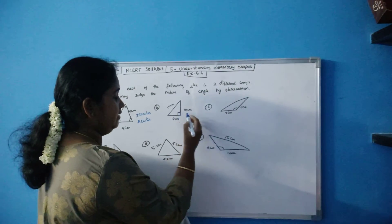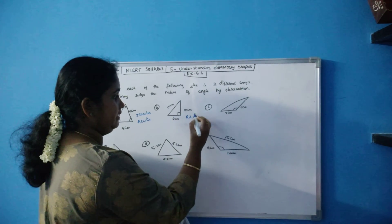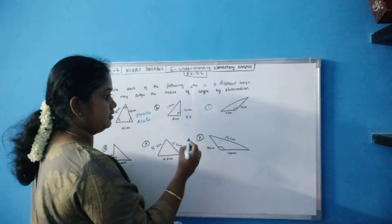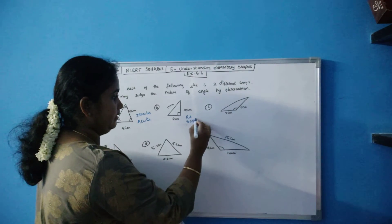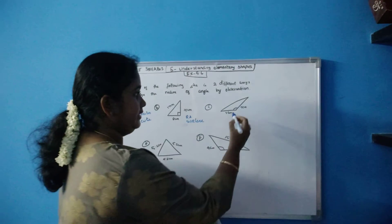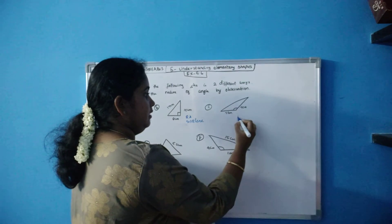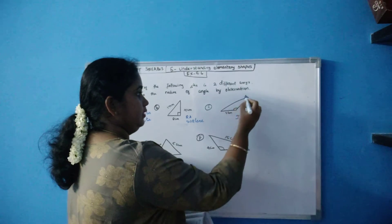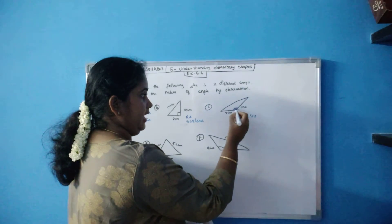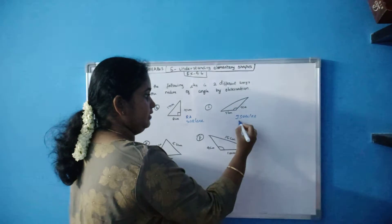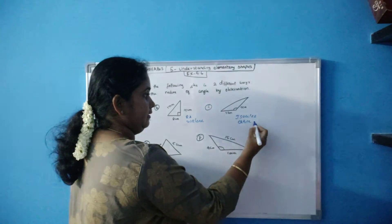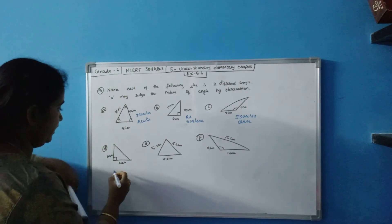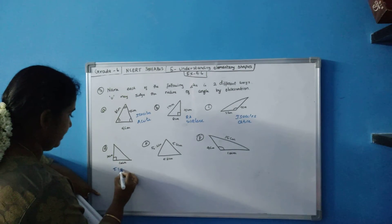See — 90 degrees, so it is a right angle triangle. And all three sides are of different length, so it is a scalene triangle. Here two sides are equal, so it is an isosceles triangle. And the angle is greater than 90 degrees, so it is an obtuse angle triangle. Next: 10 cm, 10 cm — two sides are equal, so it is an isosceles triangle. And 90 degrees — it is a right angle triangle.